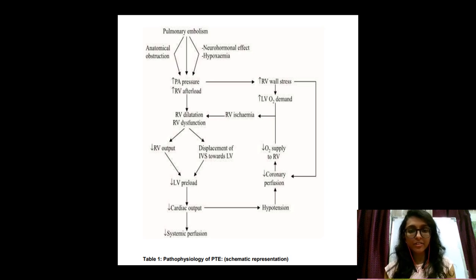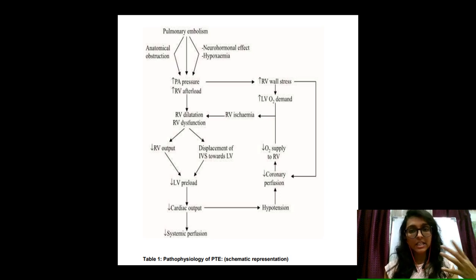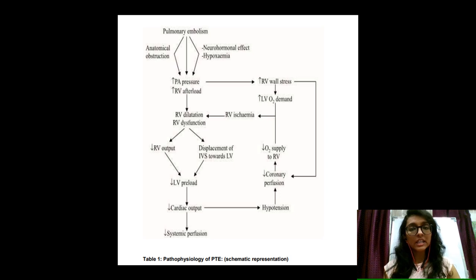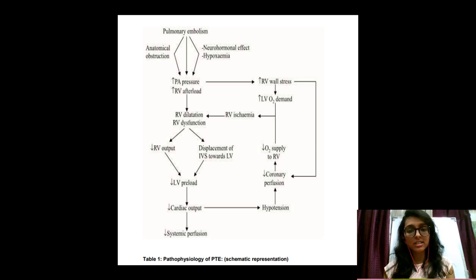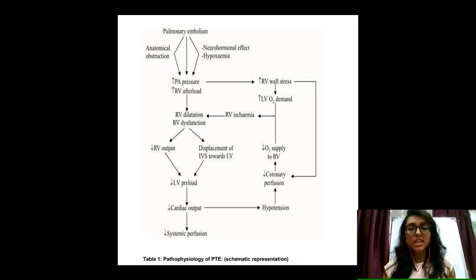This chart shows the pathophysiology of pulmonary thromboembolism. After a thrombus is dislodged in the pulmonary artery, there is an increase in pulmonary arterial pressure and thus increased right ventricular afterload. This increases right ventricular wall stress, raising oxygen demand and causing right ventricular ischemia. The ischemia causes right ventricular dysfunction, and the increased afterload directly causes right ventricular dysfunction and dilatation. This leads to decreased right ventricular output, displacement of the interventricular septum, and decreased left ventricular preload, ultimately reducing cardiac output and coronary perfusion — creating a vicious cycle of worsening ventricular dysfunction.